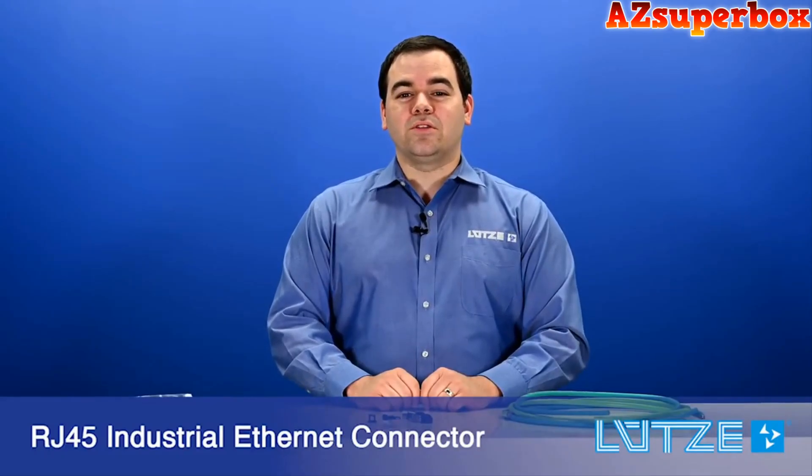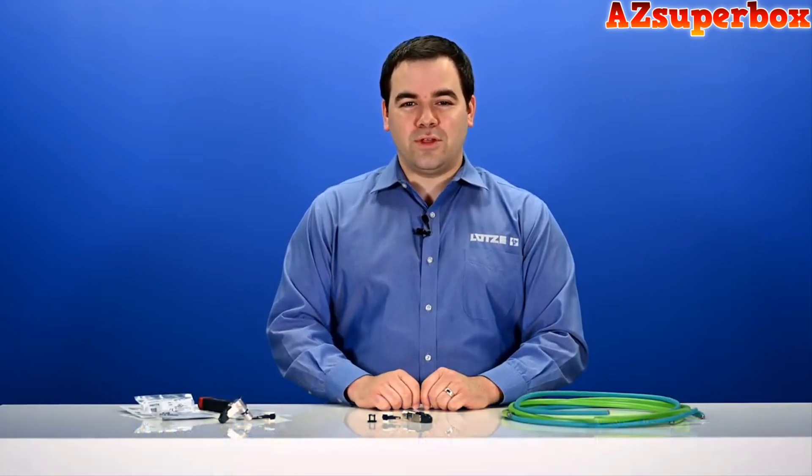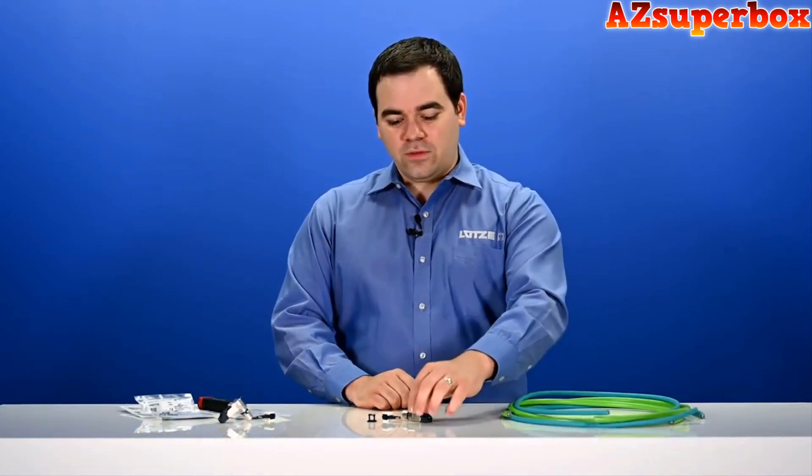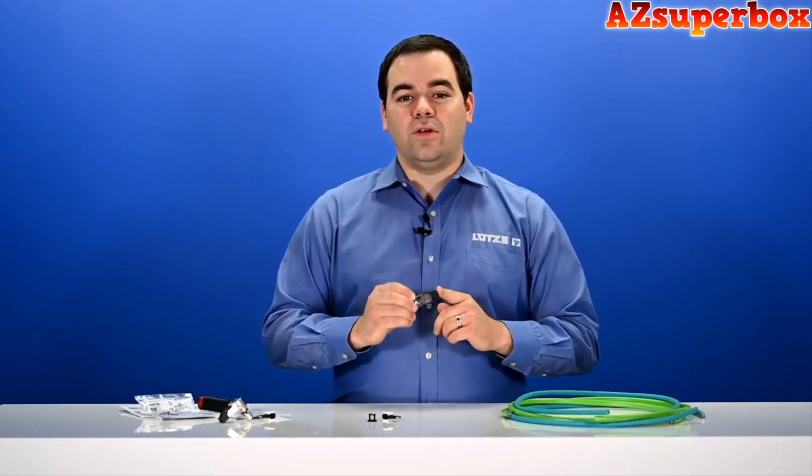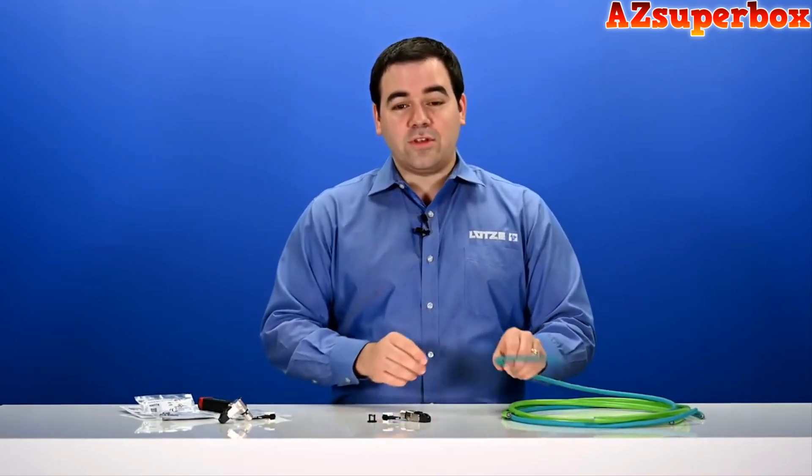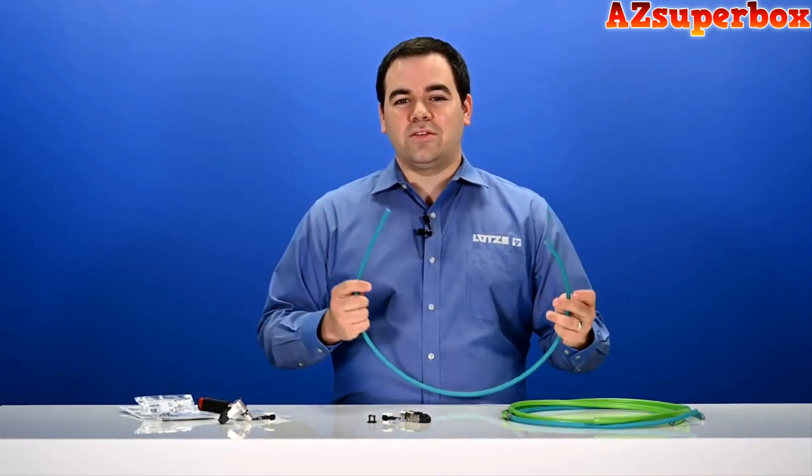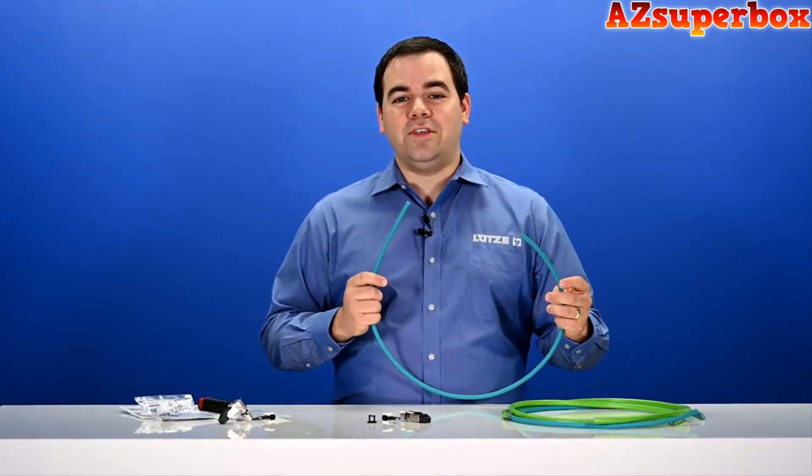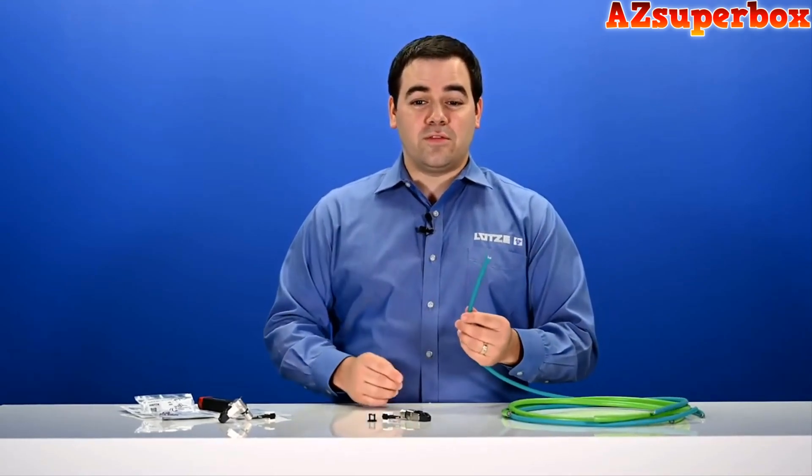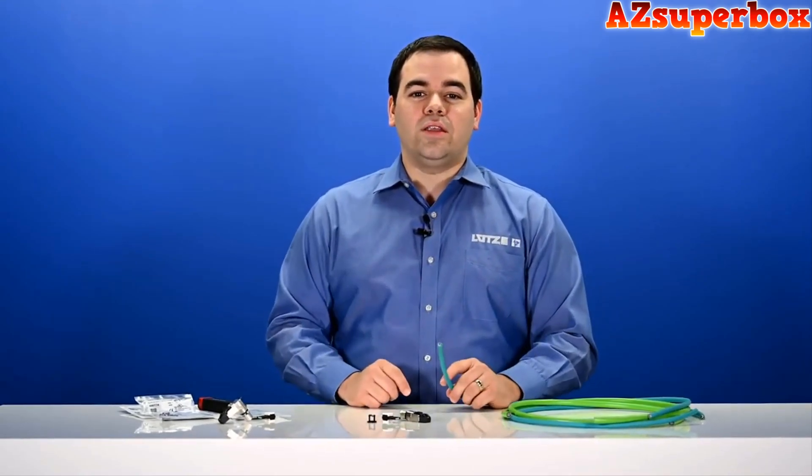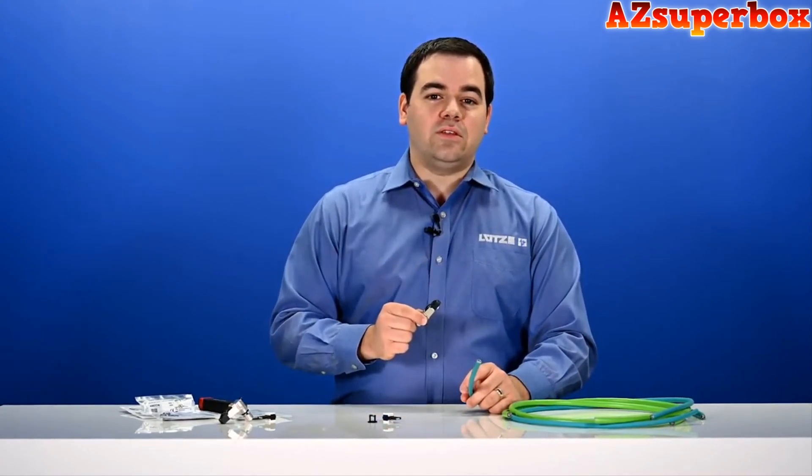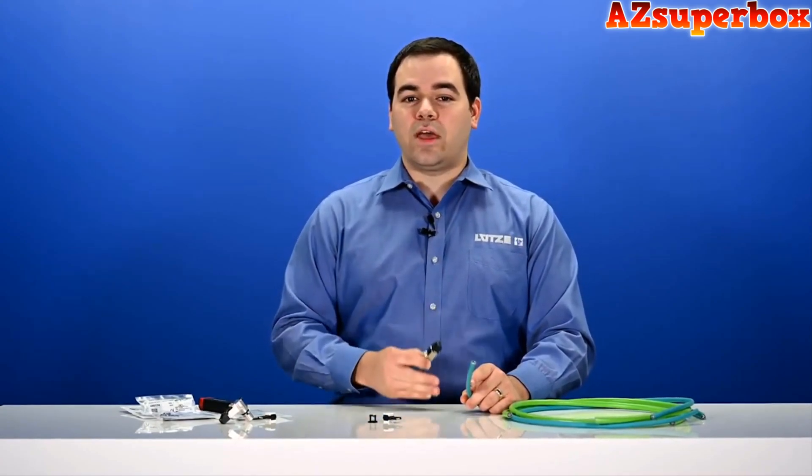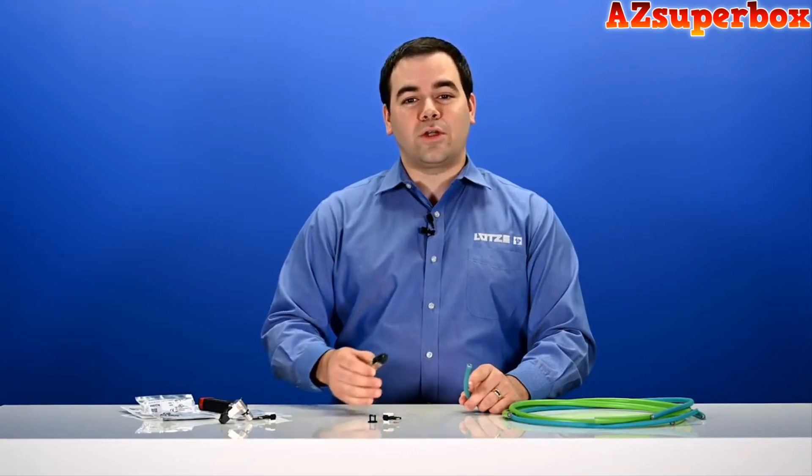Today we are going to be talking about Lutza's RJ45 Industrial Ethernet Connectors. These are a field-wireable connector solution that are fully metallic and shielded and are very easy and fast to install in the field. I brought some of Lutza's Ethernet cable with me today. This is a Lutza Motionflux Cat5e cable and we are going to go through the steps of installing this connector on an Ethernet cable. These connectors are rated to Cat6a speeds so they can be used with any cable from Cat5e, Cat6 or Cat6a.